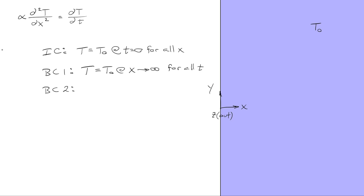We can do a few things for the second boundary condition, which applies at x equals zero for all time. We can specify the temperature at x equals zero, specify the flux at x equals zero, or say that there's convection occurring at x equals zero — maybe there's air or water or some other fluid on the left-hand side with a heat transfer coefficient and some T-infinity. We can also have an oscillatory flux on the left-hand side, such that the wall or solid heats up and cools down periodically over time.